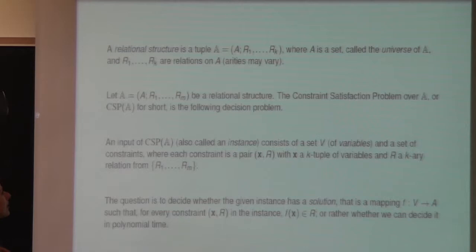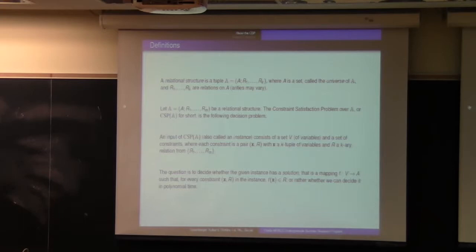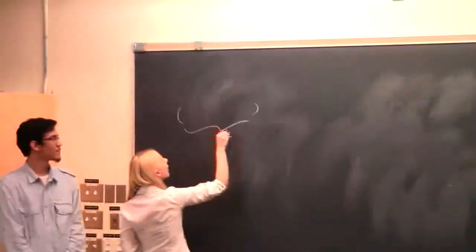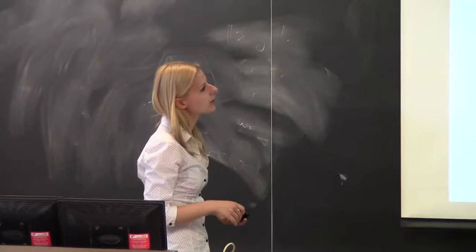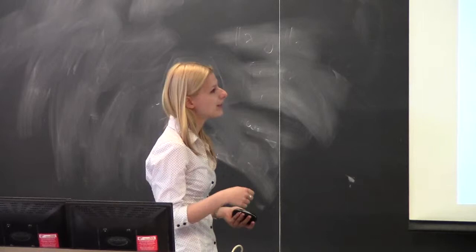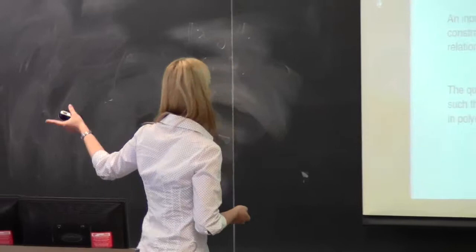After these examples, in the general definition, we say we have a relational structure when we have a universe — like the colors or true/false — and we have some relations on it. Every k-ary relation means we have k-tuples where every element of the tuple is in the universe A. If we have a set of relations and the universe, we have a relational structure, and its CSP consists of a set of variables and a set of constraints — tuples of variables required to be in some of the relations — and the question is to find a solution function satisfying all constraints.